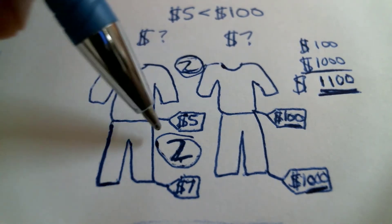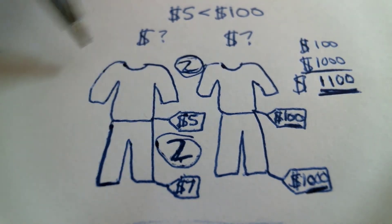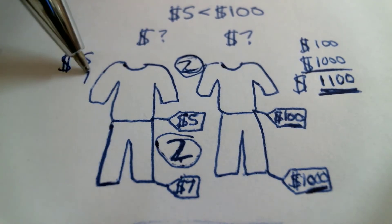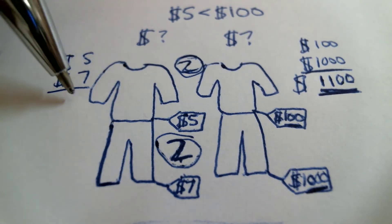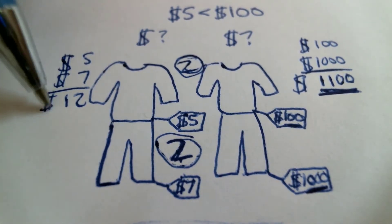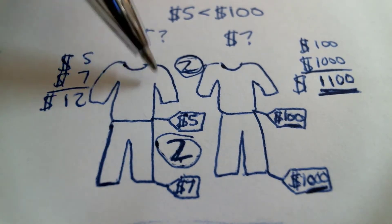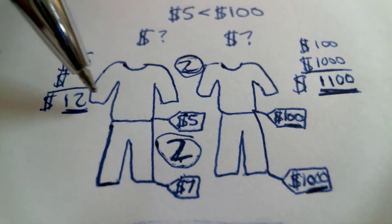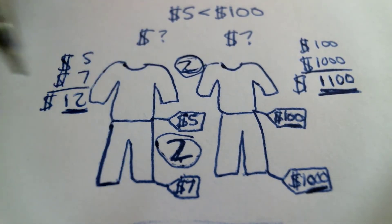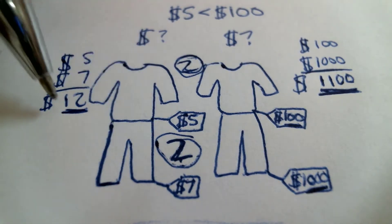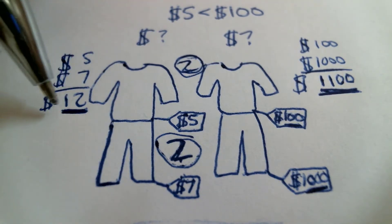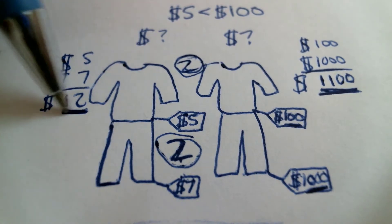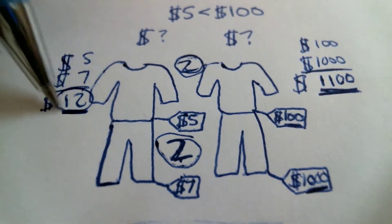How much does this shirt and this pair of pants cost altogether? Well, the shirt costs $5 and the pants cost $7. So $5 plus $7 equals $12. Altogether they cost $12. The shirt and the pants cost $12 altogether. Are they expensive? No, they're not expensive at all. They only cost $12. That's not expensive.